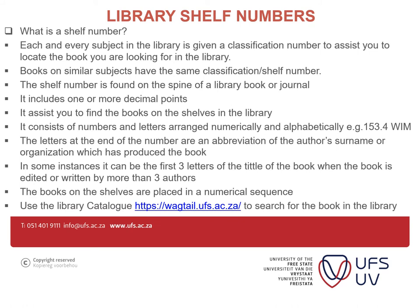For example, 153.4 — the letters at the end of the number are an abbreviation of the author's surname or organisation which produced the book. In some instances, it can be the first three letters of the title of the book, when the book is edited or written by more than three authors. Books on the shelves are placed in numerical sequence. Use the library catalogue to search for books in the library.